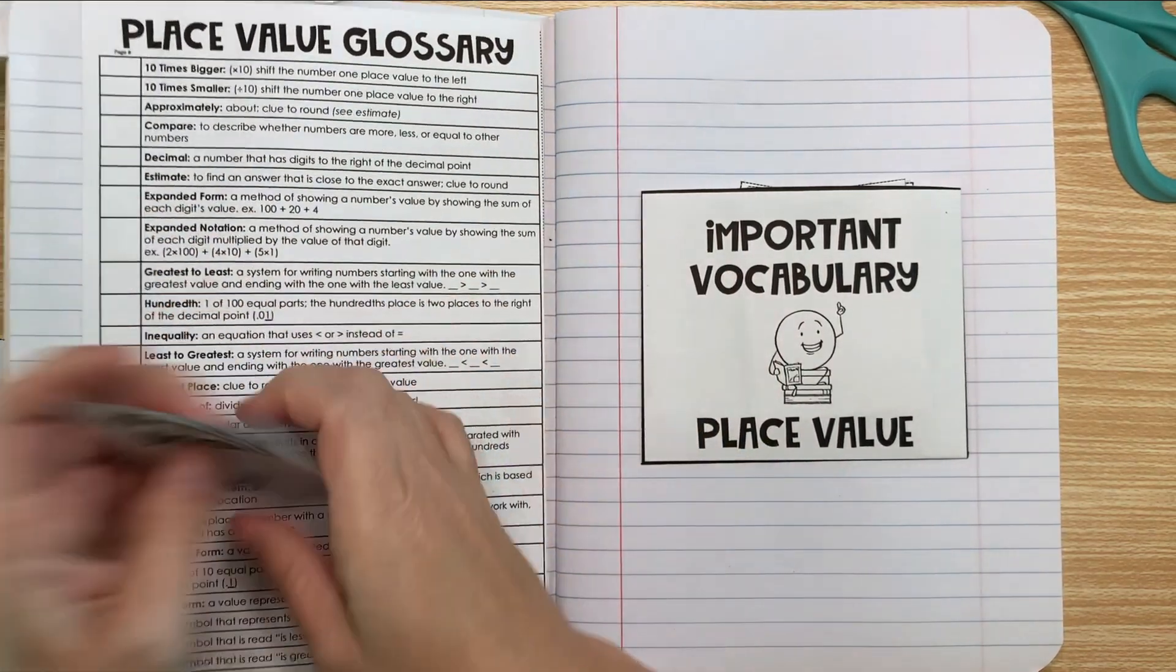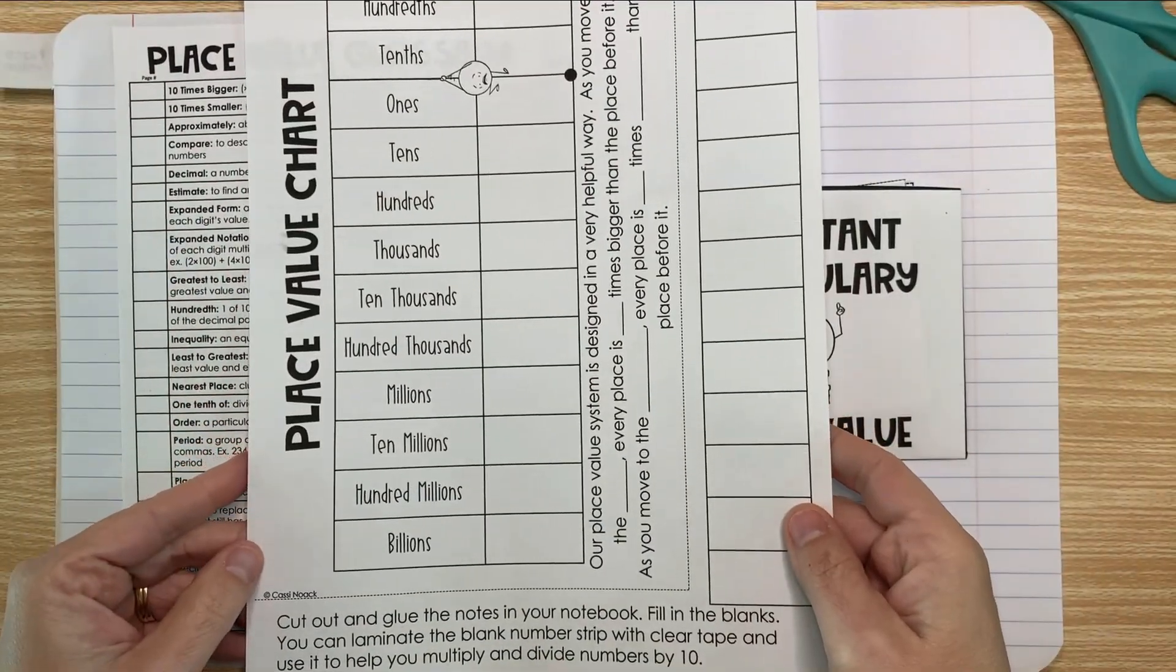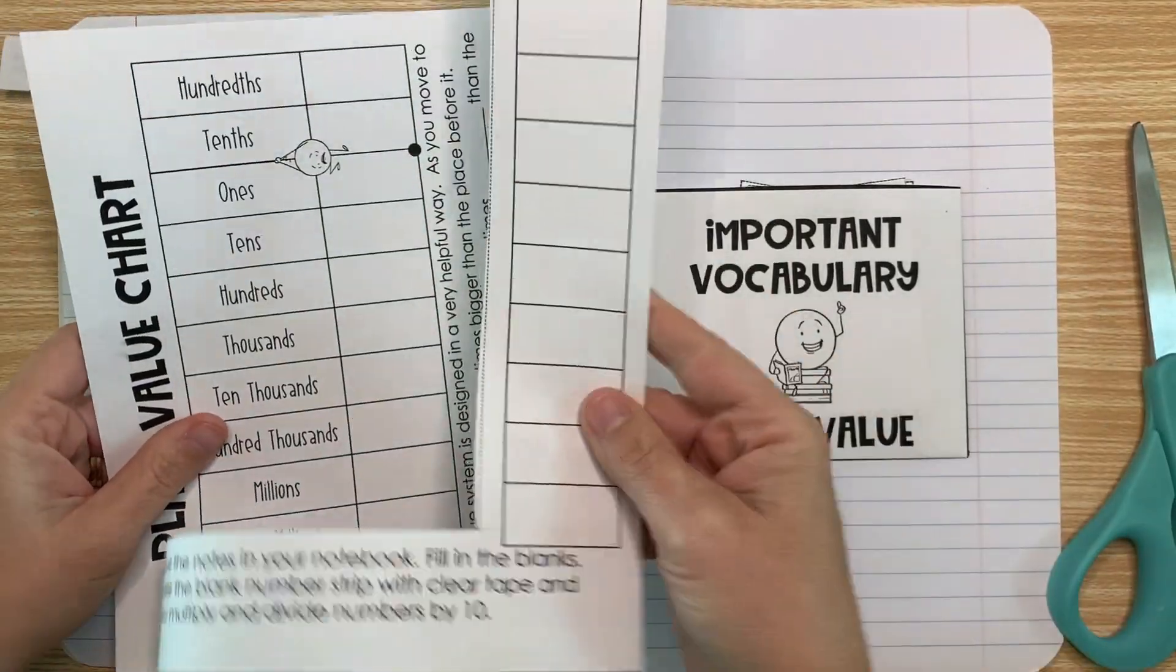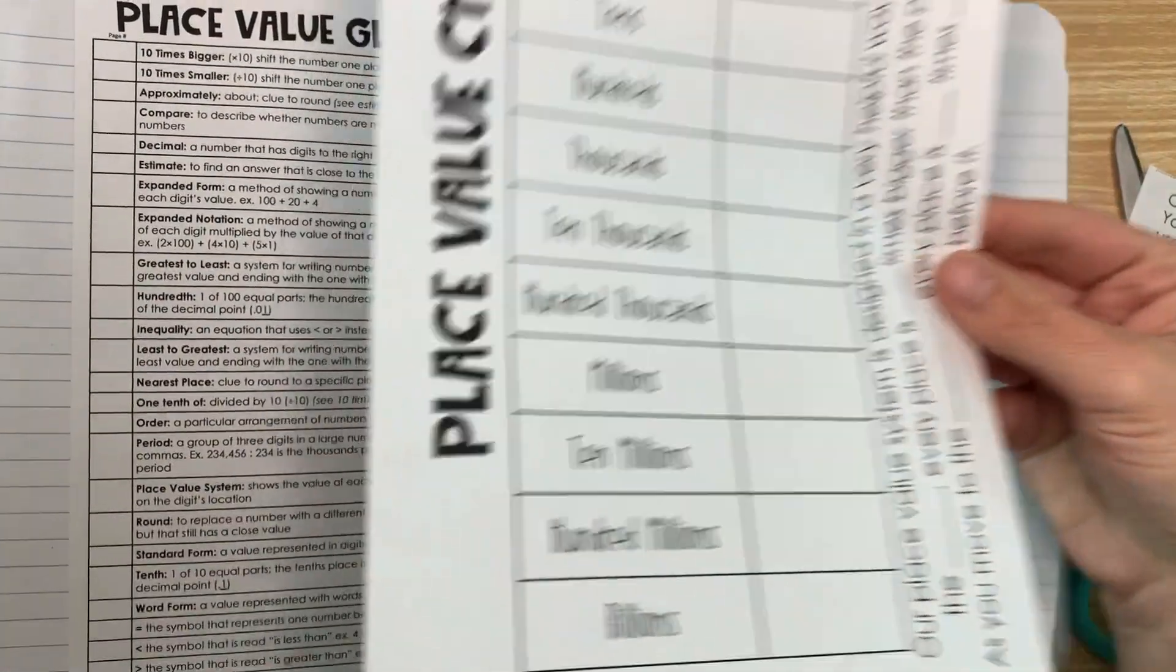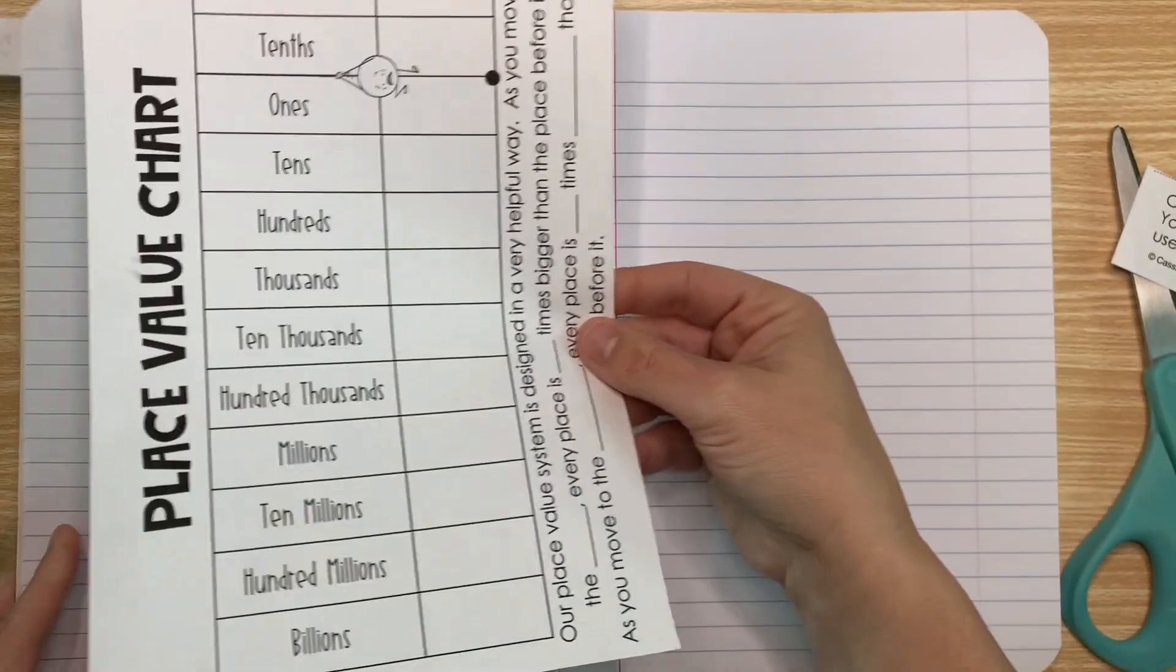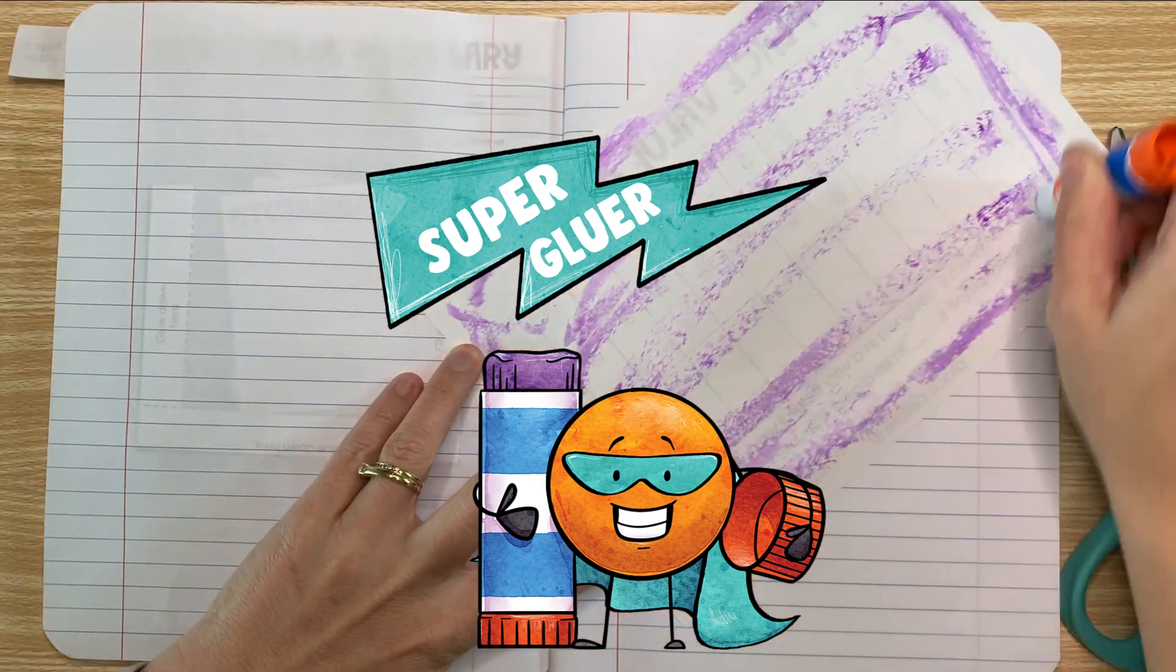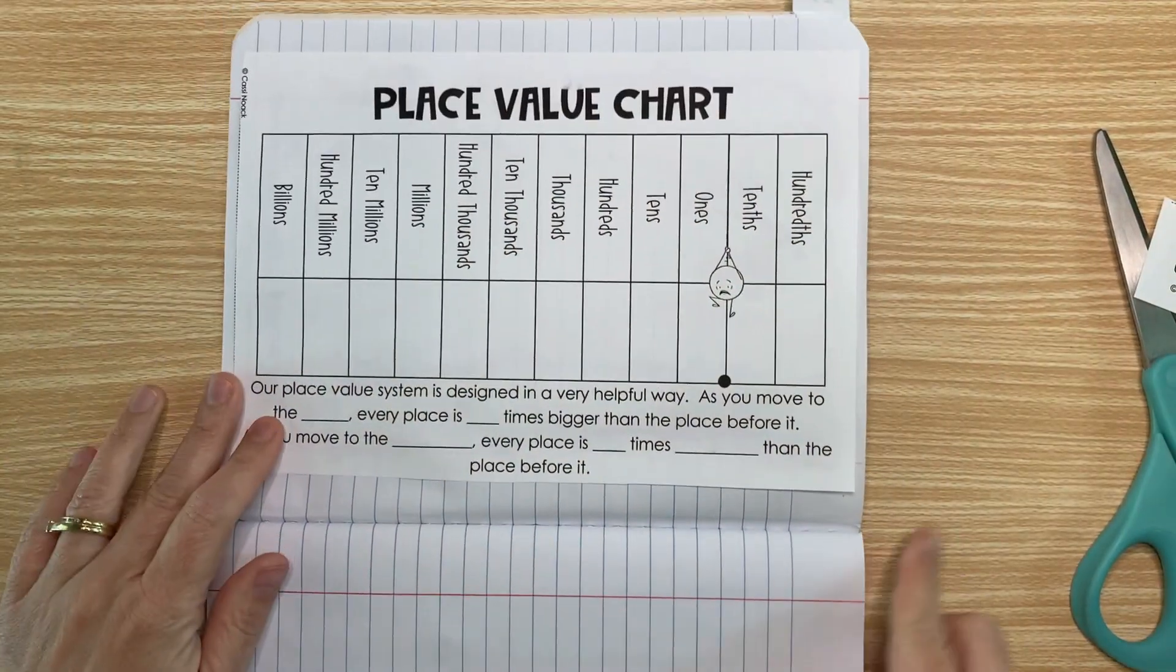So the first thing we need to do is cut out our page for our notebook. Now don't throw the rest of this away because we're going to use it. But first, let's go ahead and glue this down on the next page. I'm going to turn my notebook sideways so that I can see it a little bit better.